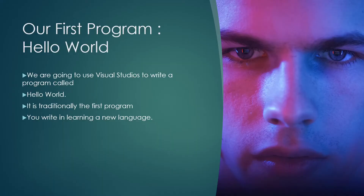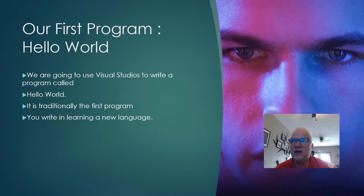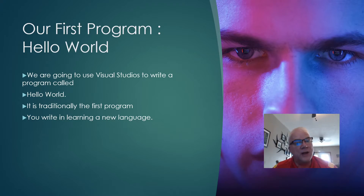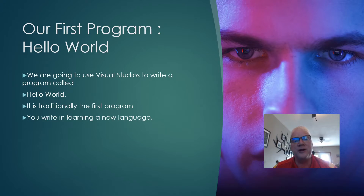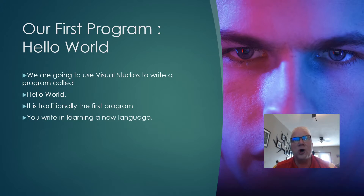We're going to use Visual Studios to write our program. We're going to write the Hello World program. It is the first program in learning a new language — whether you're learning Python, whether you're learning C-Sharp, whether you're learning C++, or Java, or any other languages. A lot of times we write this program that is called Hello World. It's that traditional program.